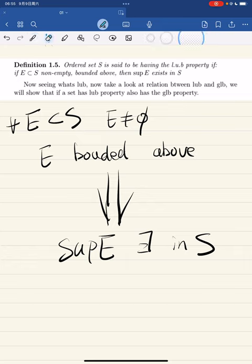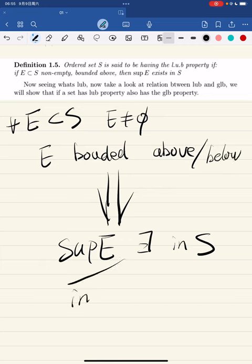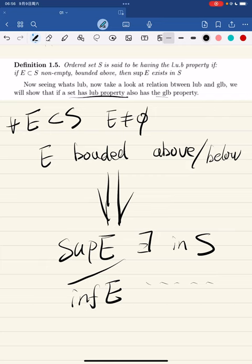Similarly the greatest lower bound property states that for any non-empty subset of s that is bounded below, the infimum exists in s. The next theorem discovers the relationship between the least upper bound property and the greatest lower bound property: if a set has the least upper bound property, then it also has the greatest lower bound property. This means we only need to define the least upper bound property and the set automatically has the greatest lower bound property.